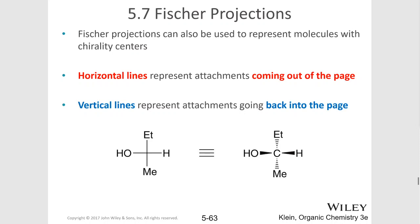Horizontal lines are used in a Fischer projection to represent attachments that are coming out of the page, and vertical lines represent attachments going back into the page. So, everything on the vertical is moving away from you, and everything on the horizontal is coming out at you — which is not a natural conformation for a larger molecule, but it is a way to represent a chiral center without having to draw all these wedges and dashes.